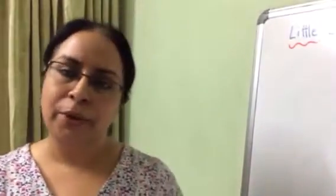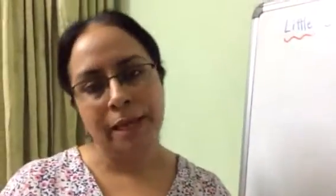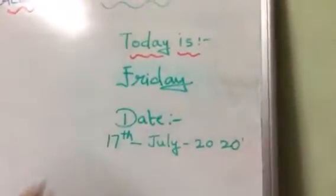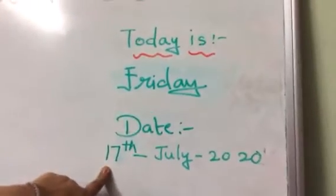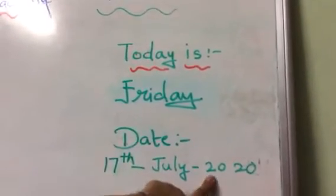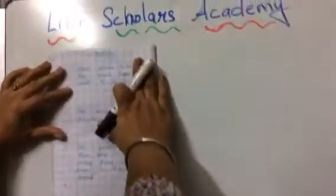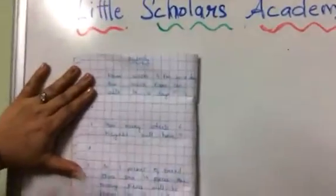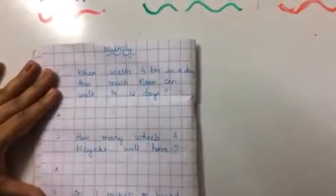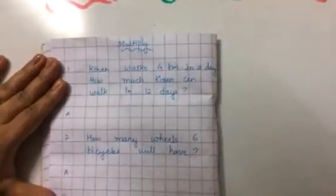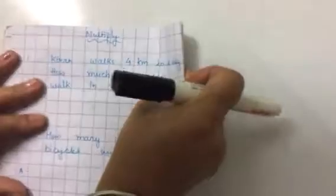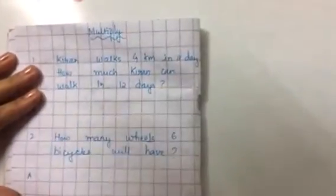So what we are doing today? We are doing again word problems of multiplication. Let's see. What is the day today? Today is Friday and the date is 17th July 2020. Very good. So let's start.